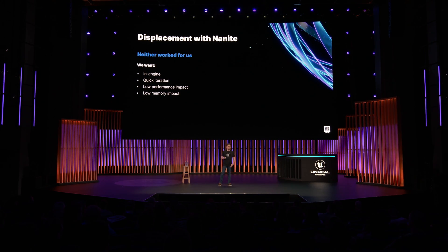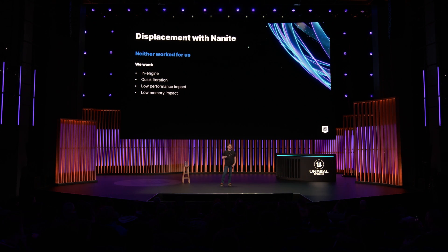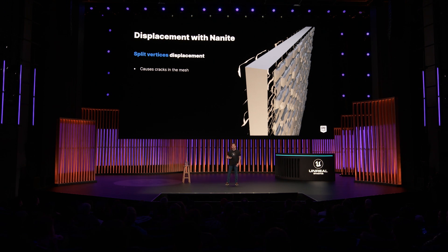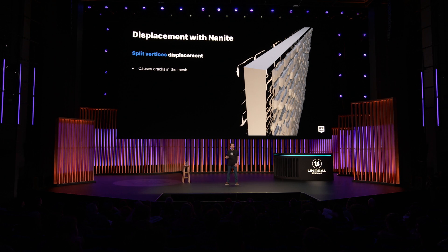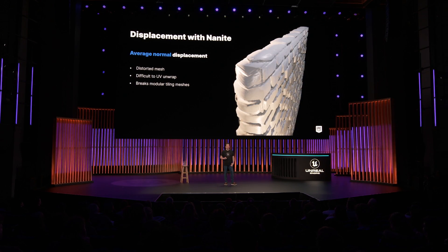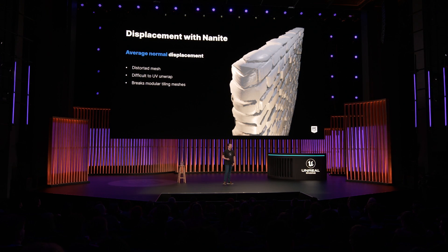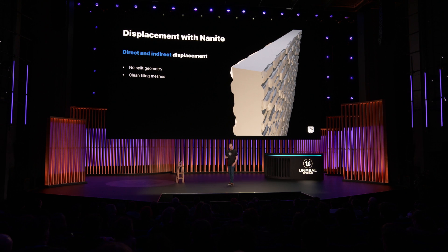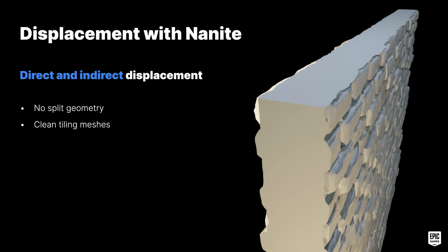We needed something that's in-engine, lets us quickly iterate, and has lower performance and memory impact. The most common problems with displacement are: if you do displacement on split vertices, you get cracks in the mesh; if you do it on an average normal, you get a distorted mesh that's difficult to UV unwrap and breaks modular seamless tiling. We needed a mixture of direct and indirect displaced surfaces with no splits in the geometry while maintaining a clean tiling mesh.